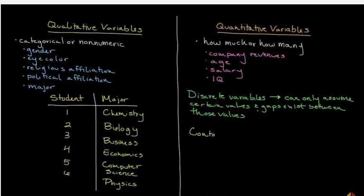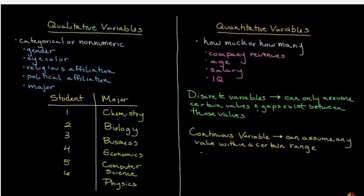Now a continuous variable is one that can assume any value within a certain range. A common continuous variable would be profits. Profits can be very specific, you're not only predisposed to certain selections, there's not certain gaps, so they can be very detailed.